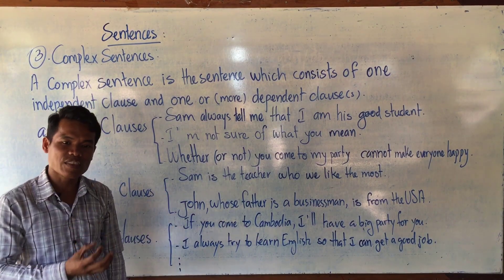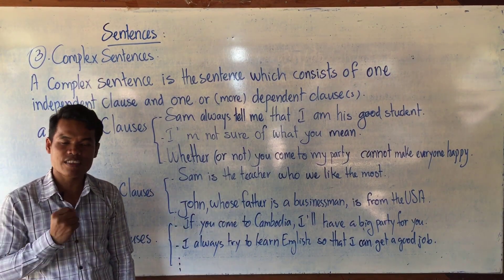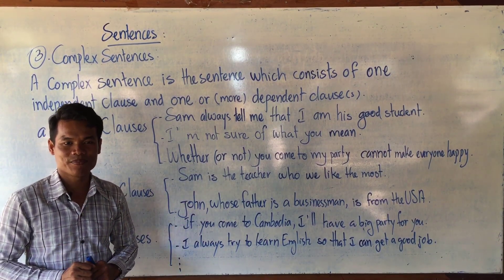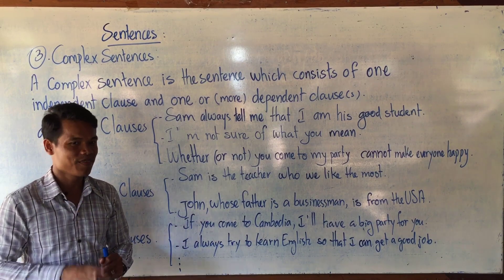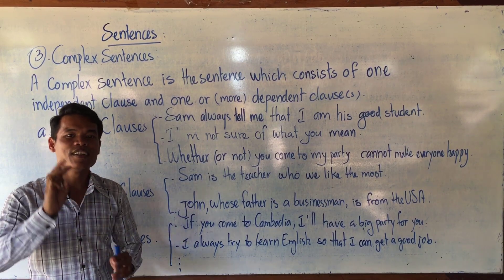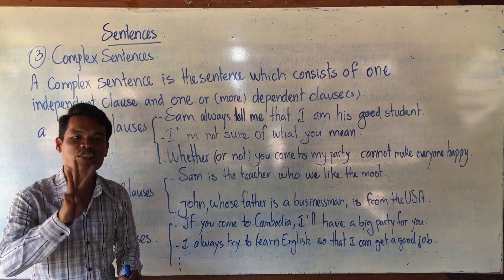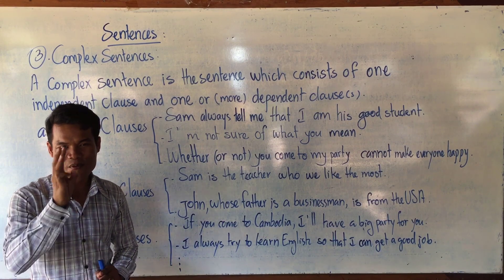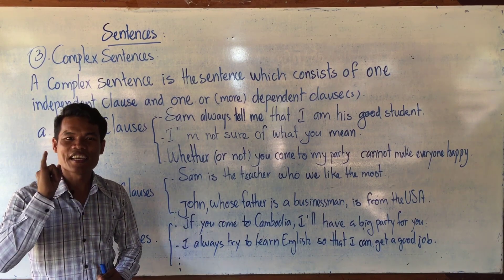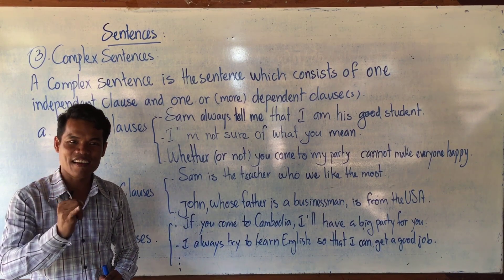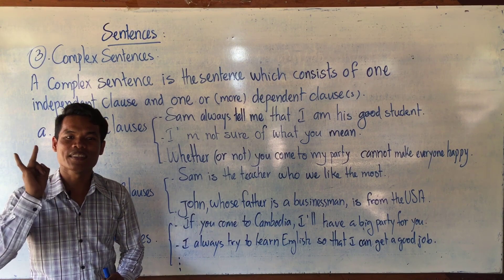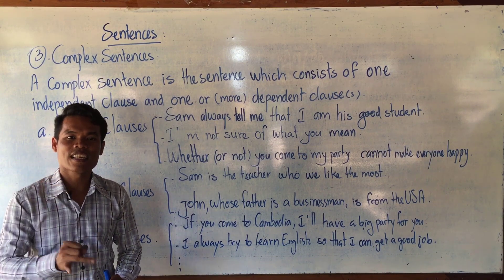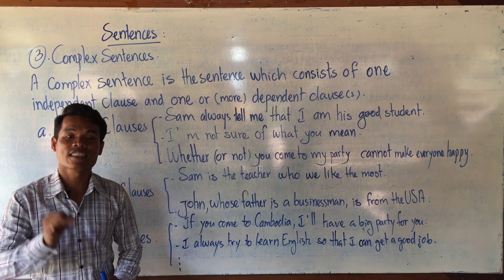Now, noun clauses. How many types of noun clauses are there? There are three types of noun clauses. Number one is the that-clause. Number two is the wh-word clauses, also called wh-clauses.